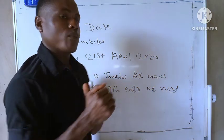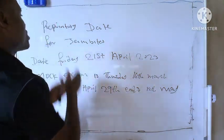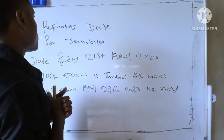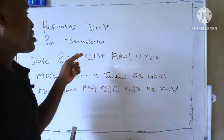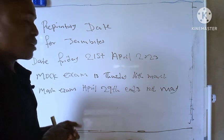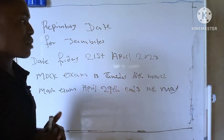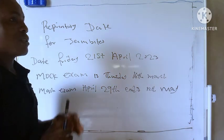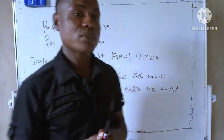Welcome back to my channel. I tried to write everything for you to understand better. The reprinting date for JAMB 2023 is starting on Friday 21st April 2023 this year. Many students still don't understand the meaning of reprinting.